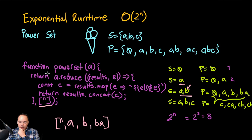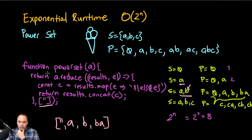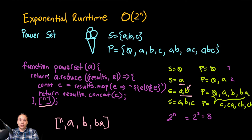The same pattern applies for three or four elements. The key to identifying exponential runtime algorithms is that they double the size on each iteration. That's why this power set algorithm runs in exponential time.